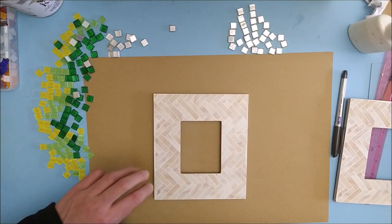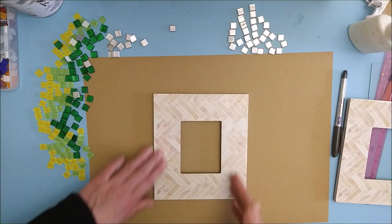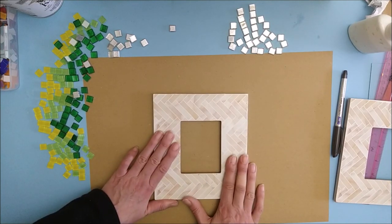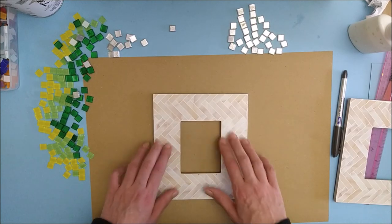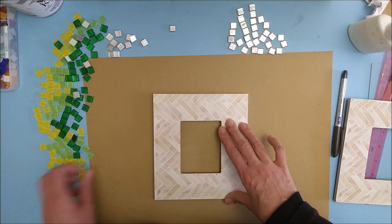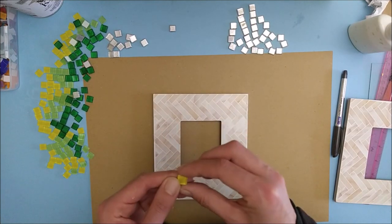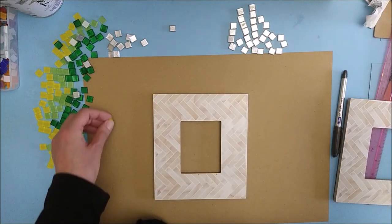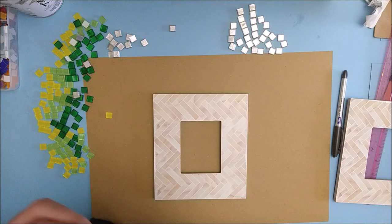When I made the pot holder we transferred a grid onto the frame. I'm not going to do that this time mostly because these tiles are slightly bigger and I can't be bothered to work out the calculations on 1.2 millimeter spaces, so we're just going to go for it and see how it goes.